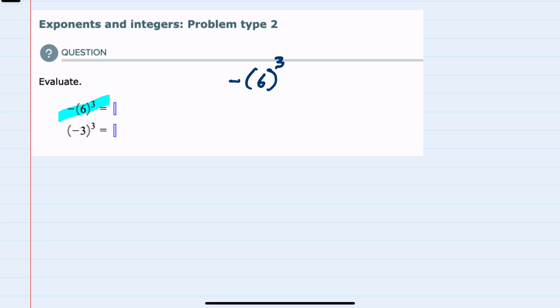To evaluate this we would first note that the negative is outside of the parentheses, so I'll just bring that down, and then the 6 is the part that's actually being cubed, so this would be 6 times 6 times 6.